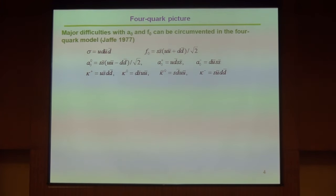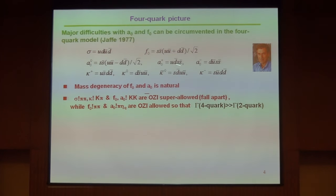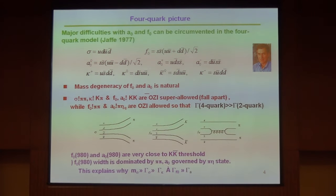Now, those difficulties—in 1977, Jaffe proposed a solution to those difficulties by assuming a four-quark model. Then the mass degeneracy of a₀ and f₀ is quite natural because of the leading strange quark content in f₀.